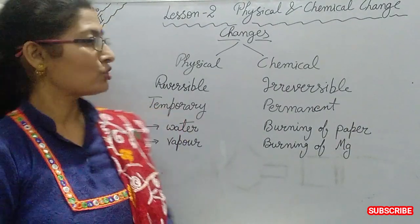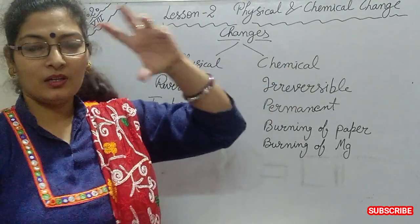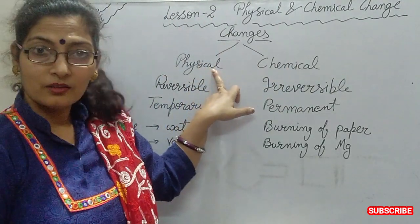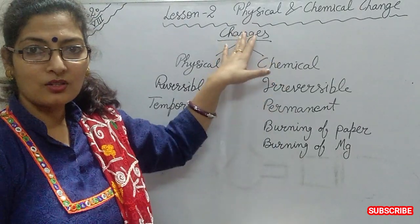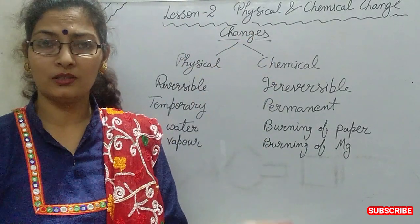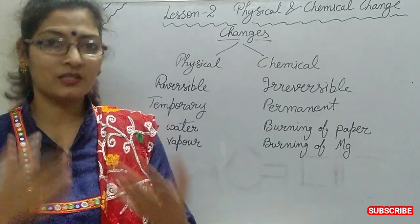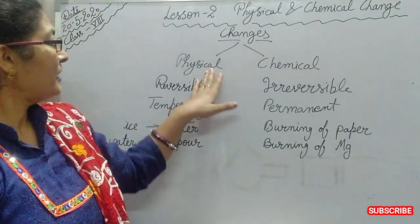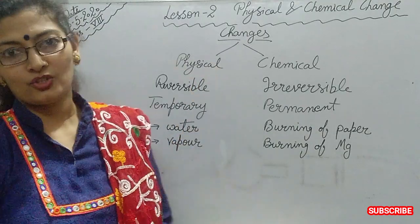So the main two types of changes are physical and chemical. There are actually many more types of changes, which we will discuss afterward, but the main two types are physical and chemical change.